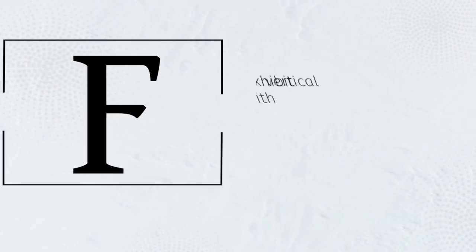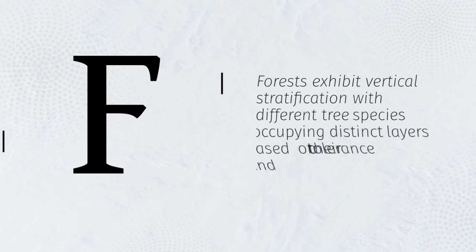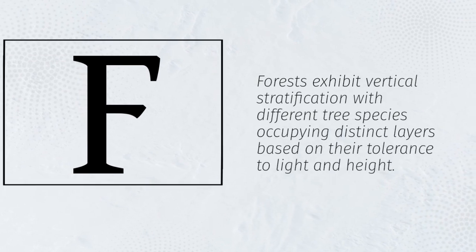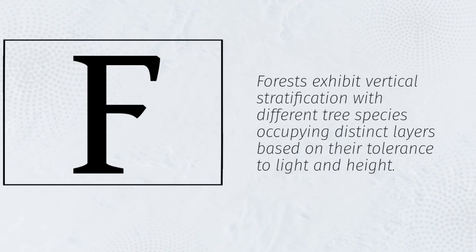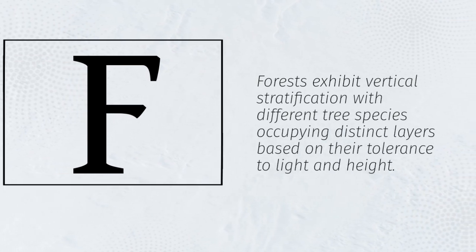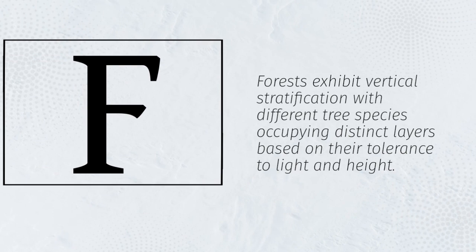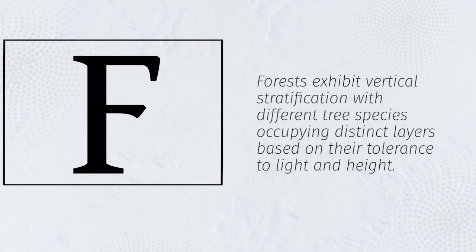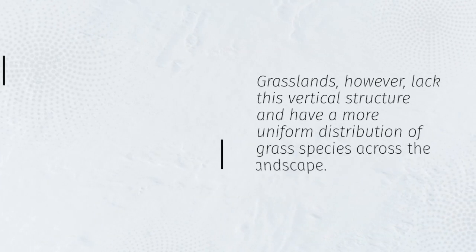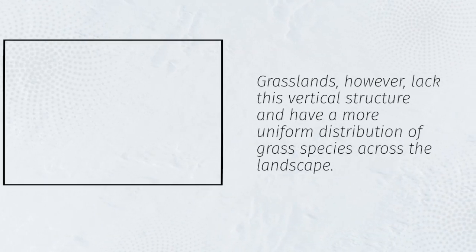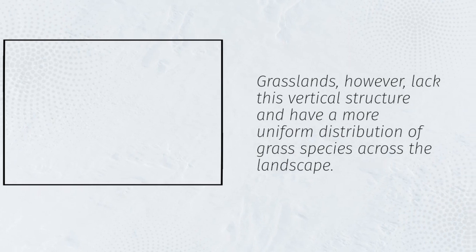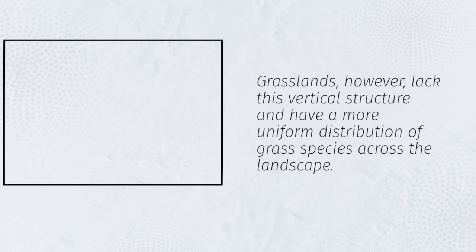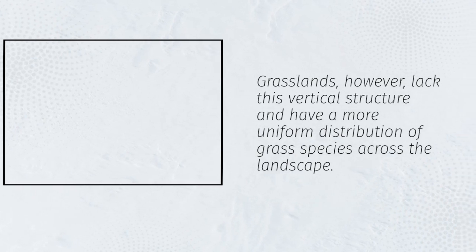Forests exhibit vertical stratification with different tree species occupying distinct layers based on their tolerance to light and height. Grasslands, however, lack this vertical structure and have a more uniform distribution of grass species across the landscape.